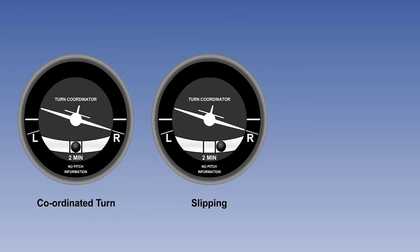The second instrument here shows an uncoordinated turn to the right, with the aircraft sideslipping towards the centre of the turn, a slipping turn. Right rudder, or less bank, would balance the turn.